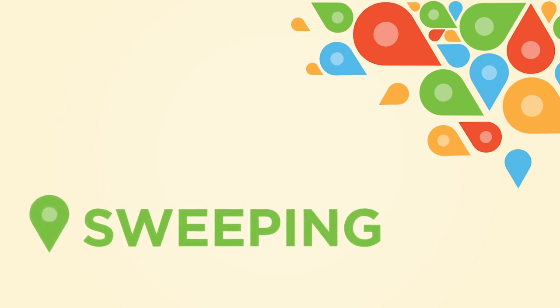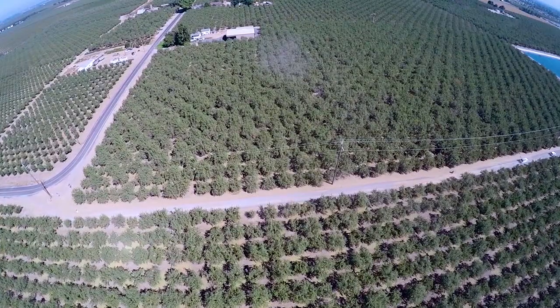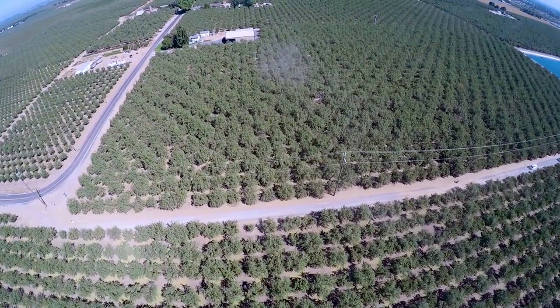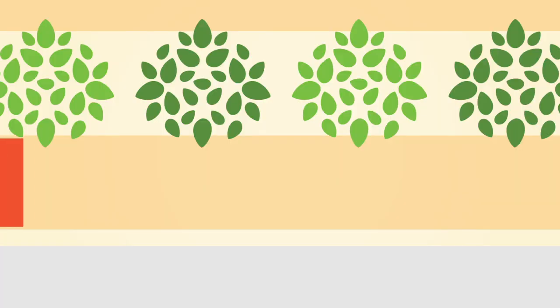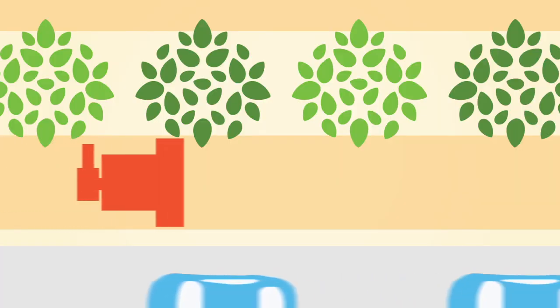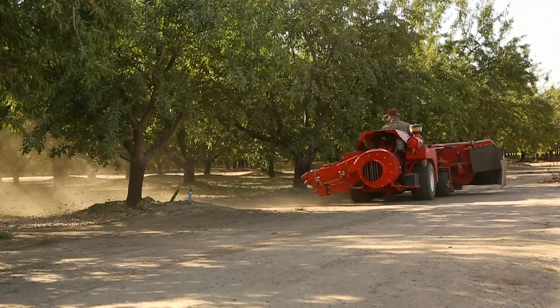Sweeping. Trees and their canopies act as filters, naturally helping to keep dust inside the orchard. Leverage them further by planning sweeper passes so that you travel in a direction that directs the dust into the orchard instead of out.